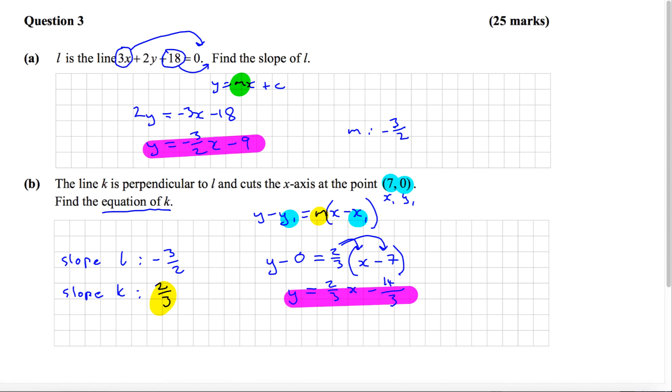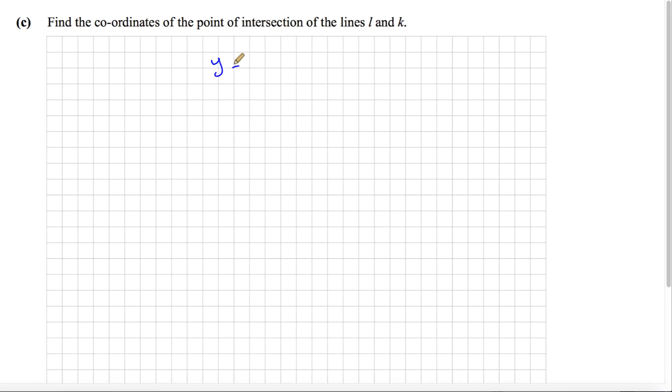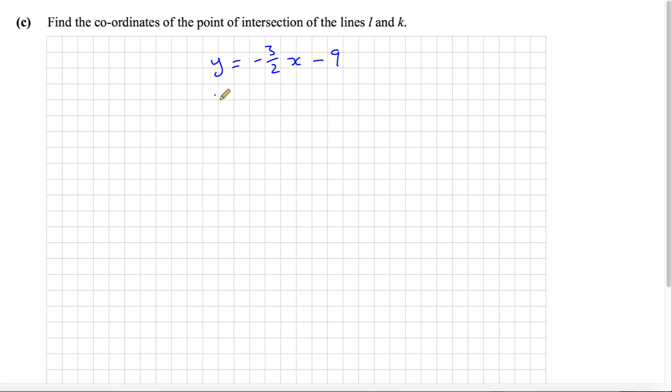We can take two versions of the line that are in terms of y. We can take this version of l and this version of k. So y equals minus 3 over 2x minus 9, and y equals 2 thirds x minus 14 over 3. There's our two lines, l and k.